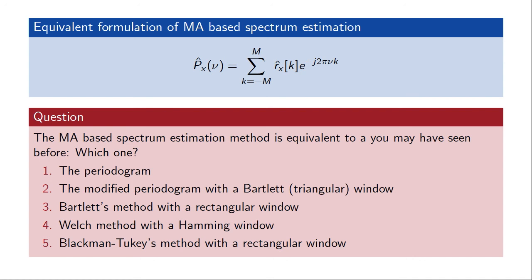The moving average estimator is equivalent to taking a partial Fourier transform of our autocorrelation estimate. The power spectrum estimate based on the moving average model can be recognized as something we have seen before — it is equivalent to one of the spectrum estimators from the last lecture. The correct answer is that it is equivalent to the Blackman-Tukey method with a rectangular window. The reason is that the Blackman-Tukey method was based on applying a window directly to the autocorrelation function, and truncating our autocorrelation function estimate is equivalent to applying a rectangular window.